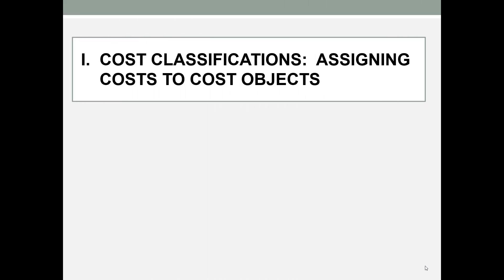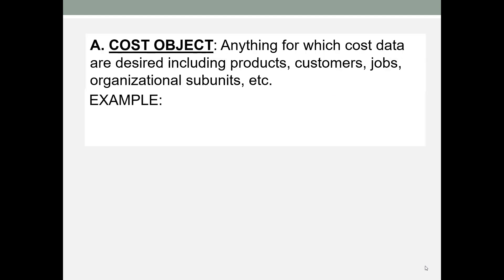One of the ways managers will need to classify cost is according to cost object. There will be two types of cost as we'll see as we go through this material. First, you need to understand what a cost object is — it's really anything that management wants cost or profit data on. So a manager may want to know the cost of producing a specific product line, or the cost of a customer order, or the cost of a specific department.